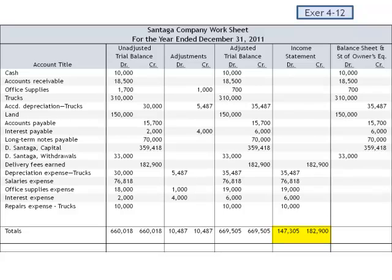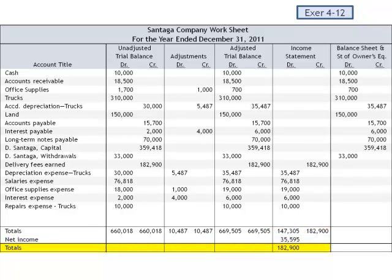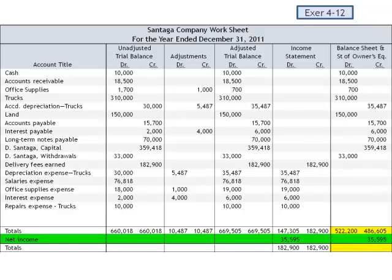So if we have $182,900 in revenues and $147,305 in expenses, the company generated net income of $35,595. We now have total debits to the income statement of $182,900 to equal the credits of $182,900. When we total the debit columns on the balance sheet and statement of owner's equity, total debits are $522,200. The credits total $486,605. The difference is our net income amount, $35,595. Net income will be added on the statement of owner's equity. Once income is transferred, total debits of $522,200 equal the total credits of $522,200.